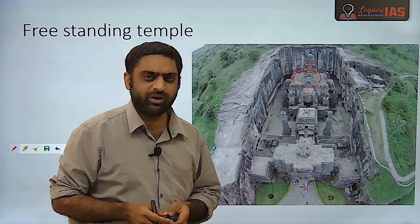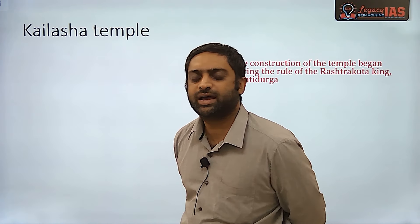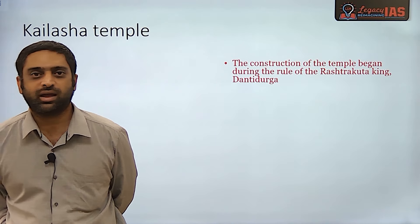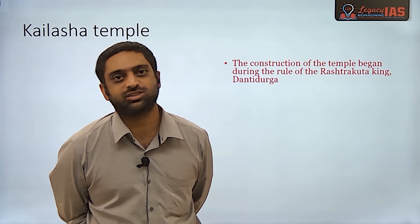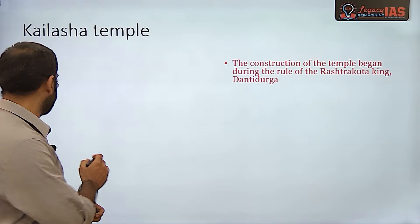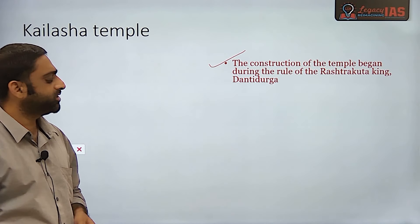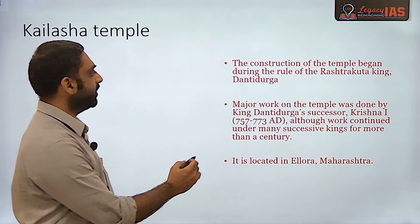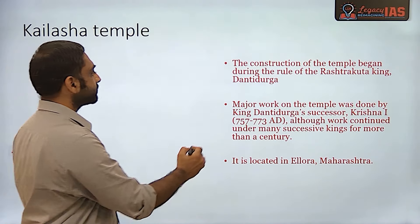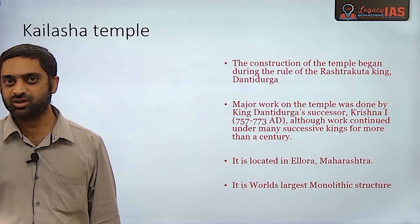Ellora has a total of 34 caves. It does not only contain this Kailashanath temple — it also has Buddhist structures, Jain structures, and Hindu structures. The Kailashanath temple is found in Cave 16. Construction of this temple was started by Dantidurga and completed during the reign of the next king, Krishna I. It is located in Ellora, Maharashtra, and is the world's largest monolithic structure.